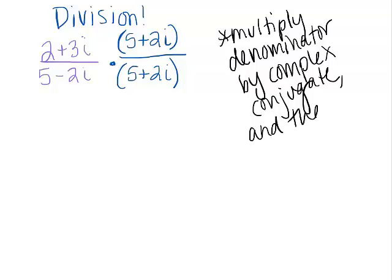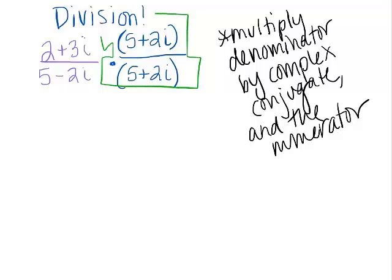So what we're actually doing, if you look at what we just multiplied by, is this was really just a form of 1. 5 plus 2i over 5 plus 2i, that's just 1. So it's okay that we're multiplying the top and the bottom by that.